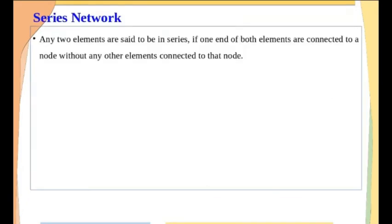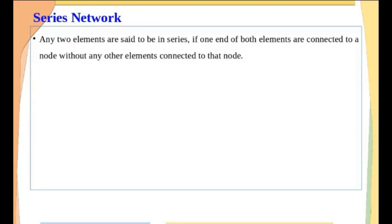Which network do we call a series network? Any two elements are said to be in series if one end of both elements are connected to a node without any other elements connected to that node. Only those two elements should be present at that node and no other element should be connected there. Then we can say that those two elements are in series.